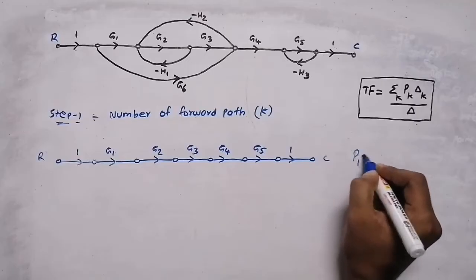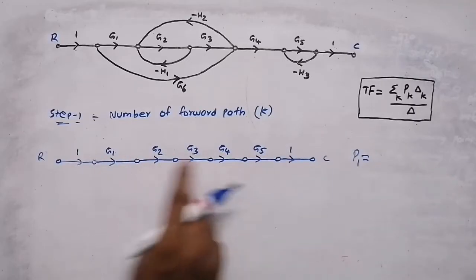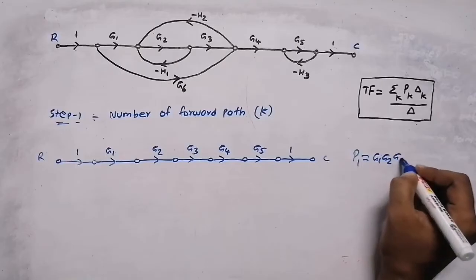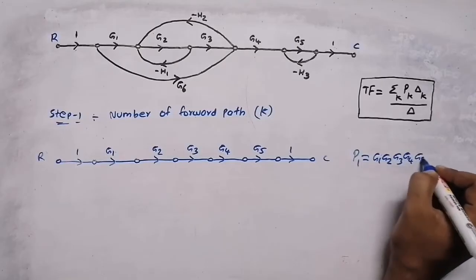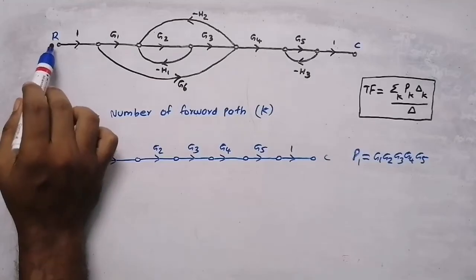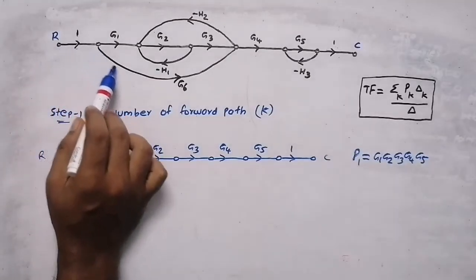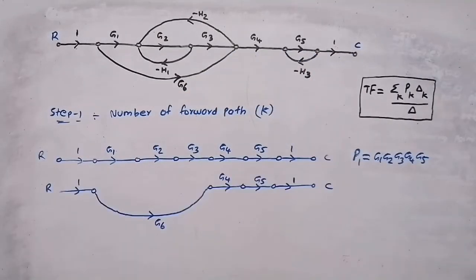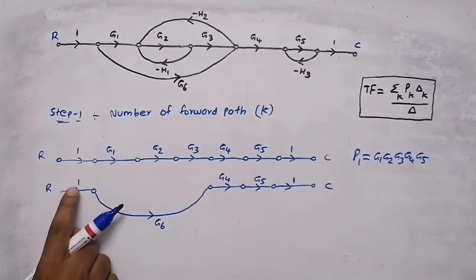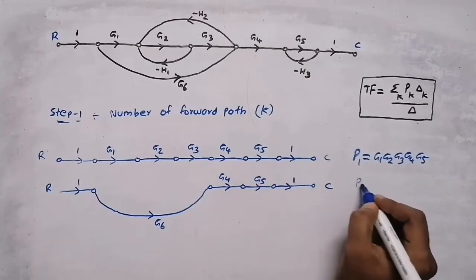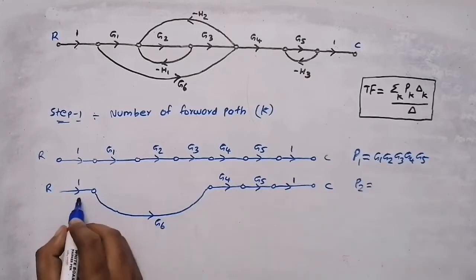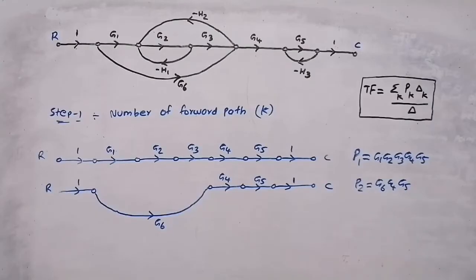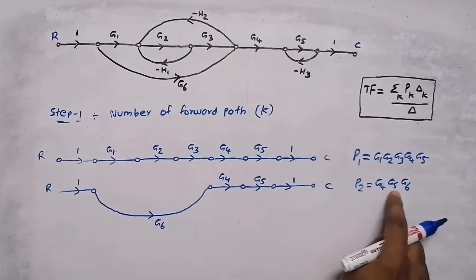The first path P1 is the product of all gains along it: 1 × g1 × g2 × g3 × g4 × g5, so P1 = g1·g2·g3·g4·g5. The second path starts from a different node: its product is 1 × g6 × g4 × g5 × 1, which we rewrite in order as P2 = g4·g5·g6.